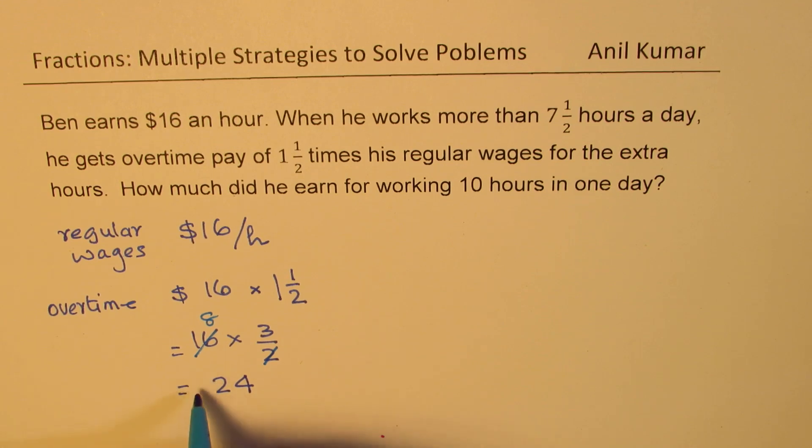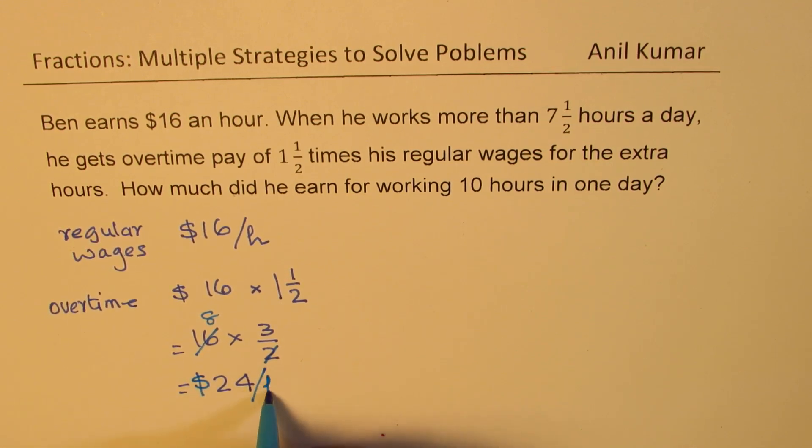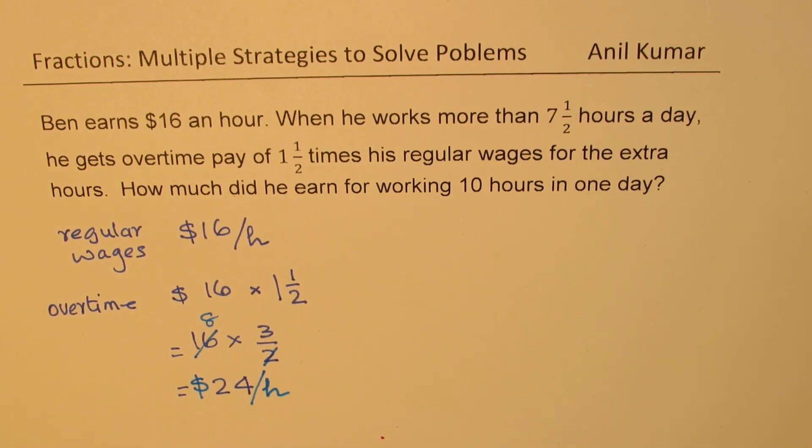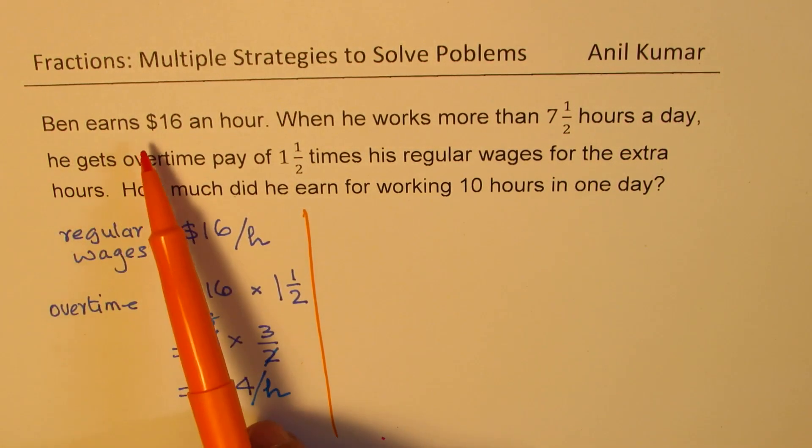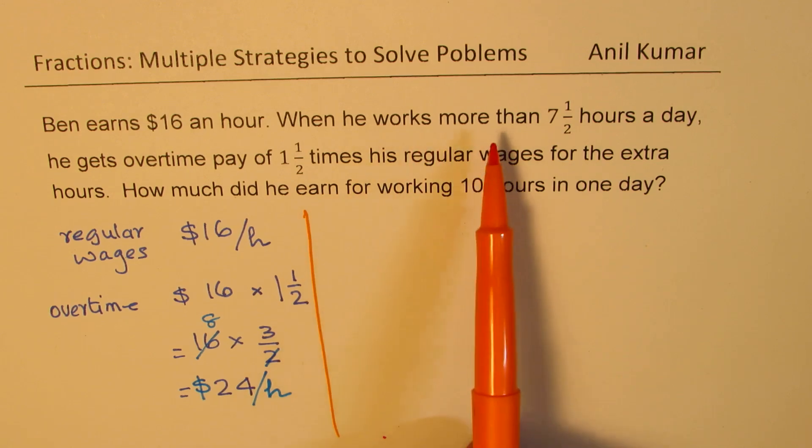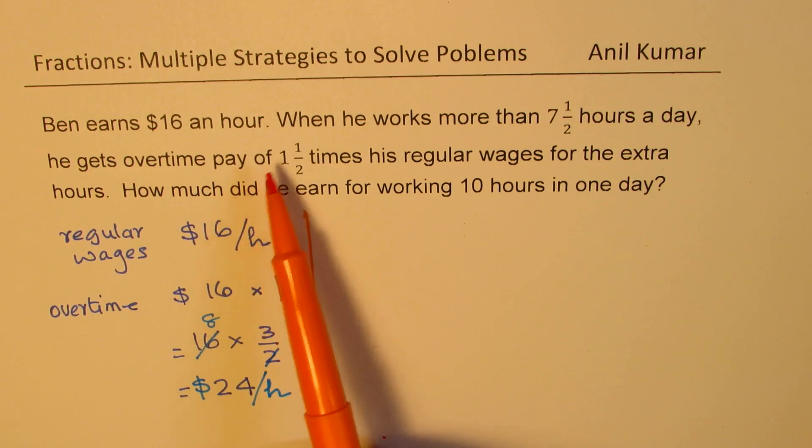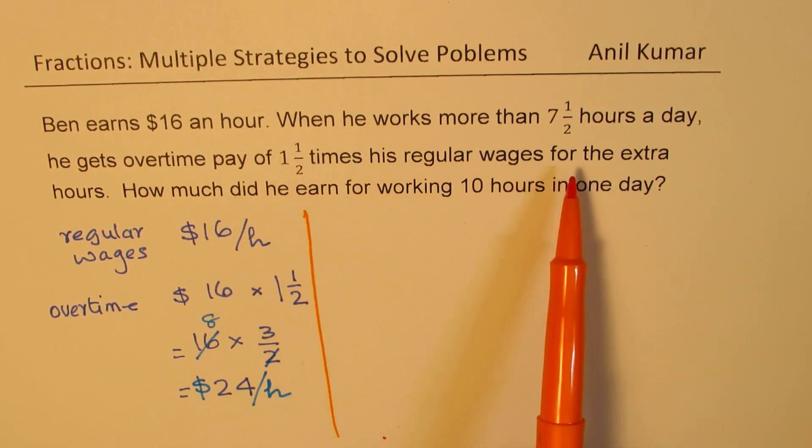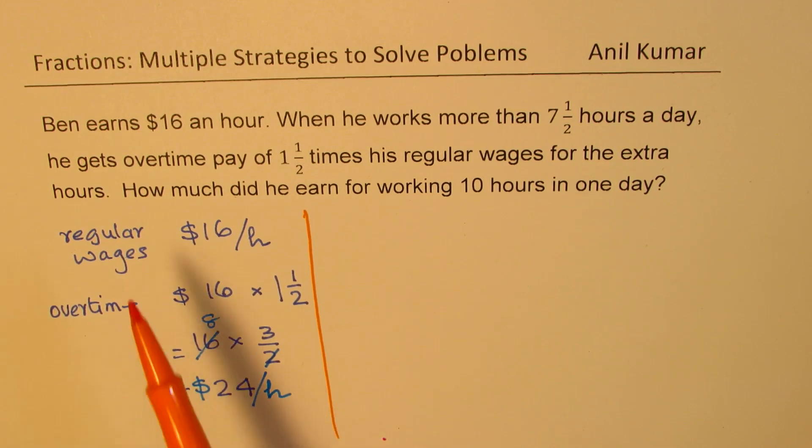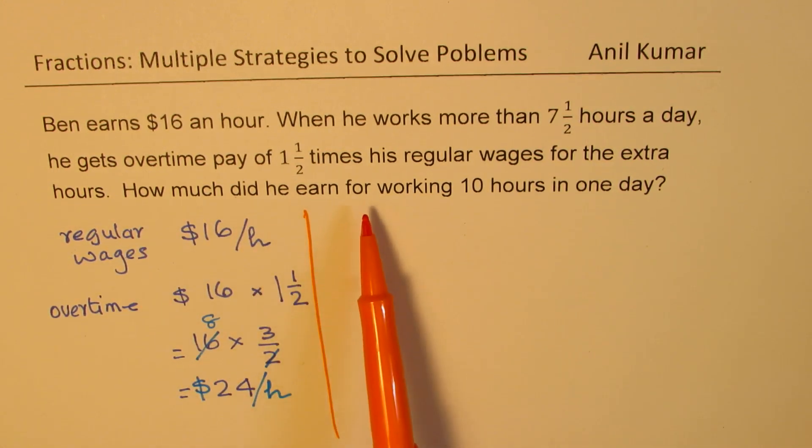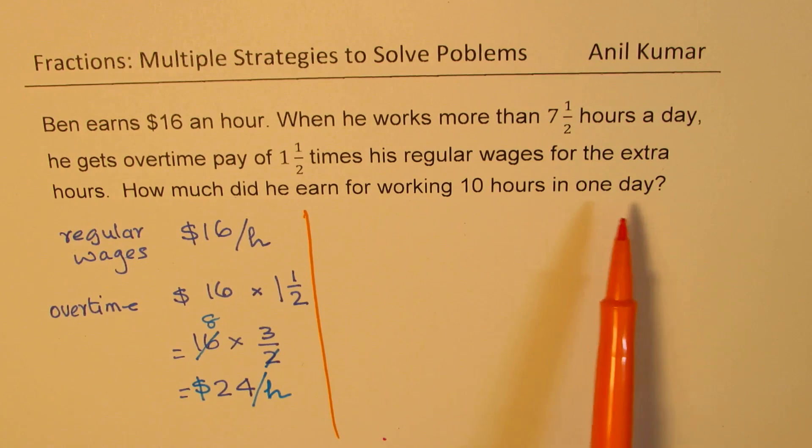So overtime is $24 per extra hour. So that is one part. Now, let's read the question. Ben earns $16 an hour when he works more than 7 and a half hours a day. He gets overtime pay of 1 and a half times his regular wages for the extra hours. So only for the extra hours, he gets this rate.